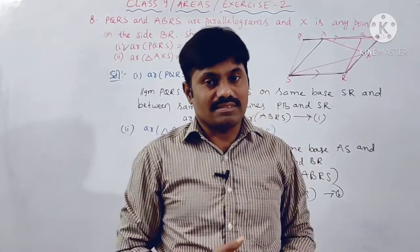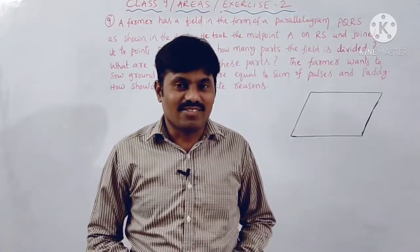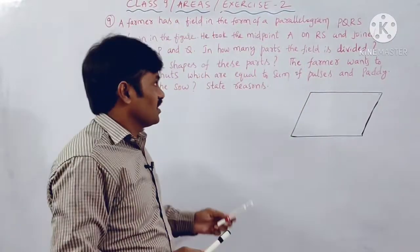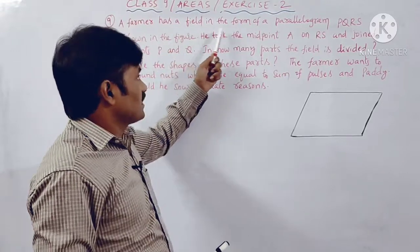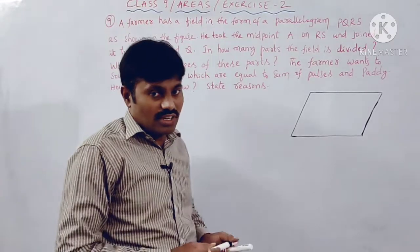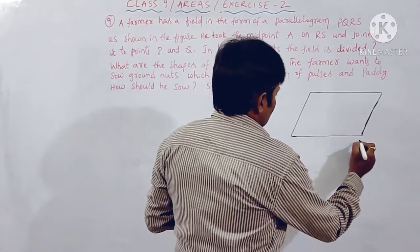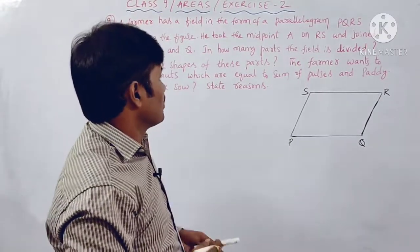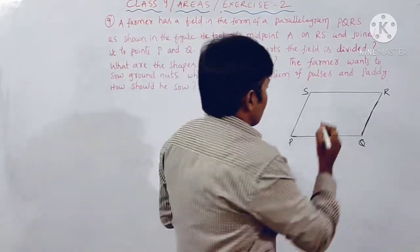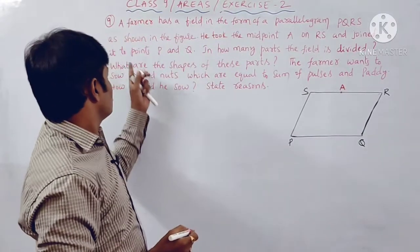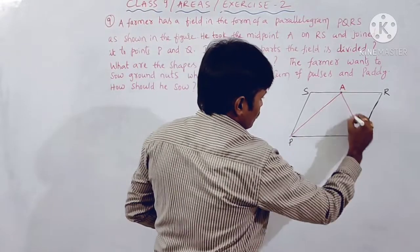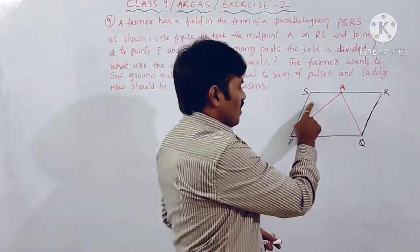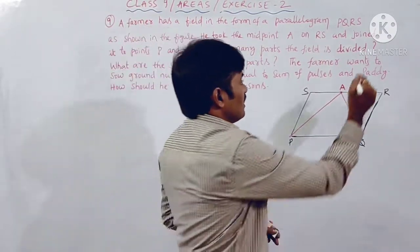Now we will discuss question number 9. It is a big question but the solution is very easy. A farmer has a field in the form of a parallelogram PQRS. He took the midpoint A on RS and joined PA and QA, dividing the field into three parts: triangle APS, triangle ARQ, and triangle APQ.